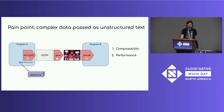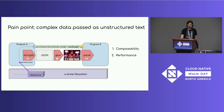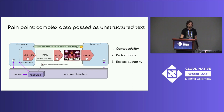Let's say program A has a file descriptor pointing to a resource and wants to pass it to program B. What often happens is you stick the resource in a file system, give it a file name, have both programs import the whole file system, and pass the file by its file name in the JSON. This is an example of what colleague Dan Goeman calls "ghosts," and it's also an example of excess authority — both programs import a whole file system just to pass a file.